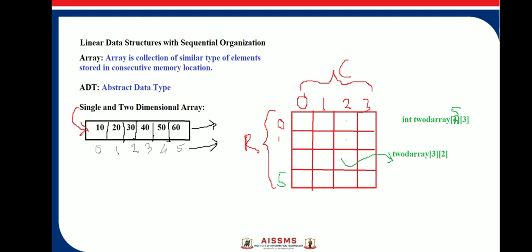Let's consider an example: 'int two_array'. Here, 'int' is the data type and 'two_array' is the array name. The size of this array is written as row by column.